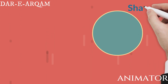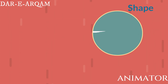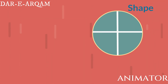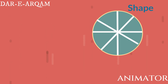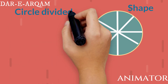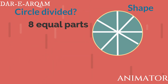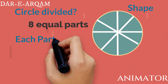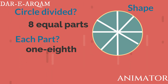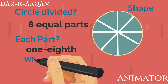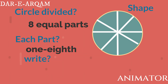Now we take another circle and divide this circle into eight equal parts. Each part will be called as one eighth and written as one by eight. So now this circle will be the fraction of each part as one by eight.